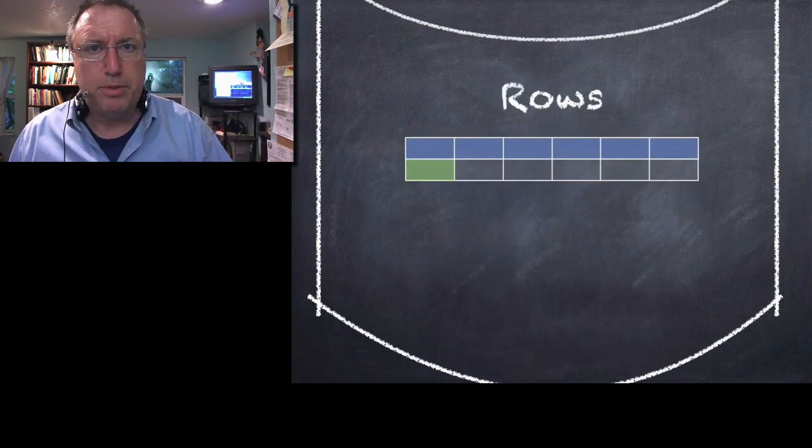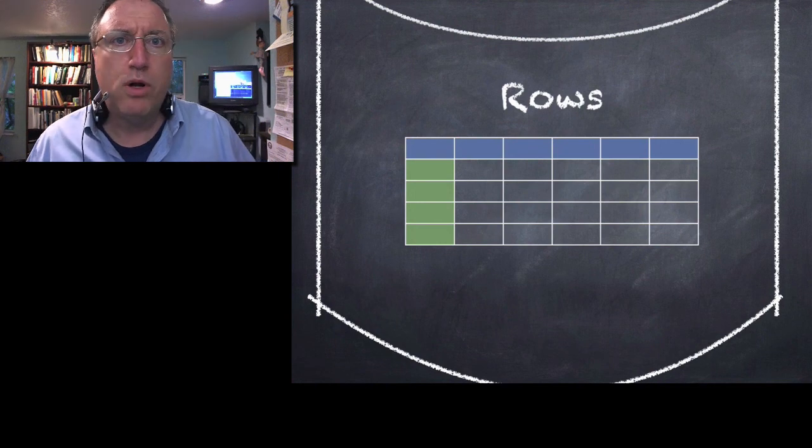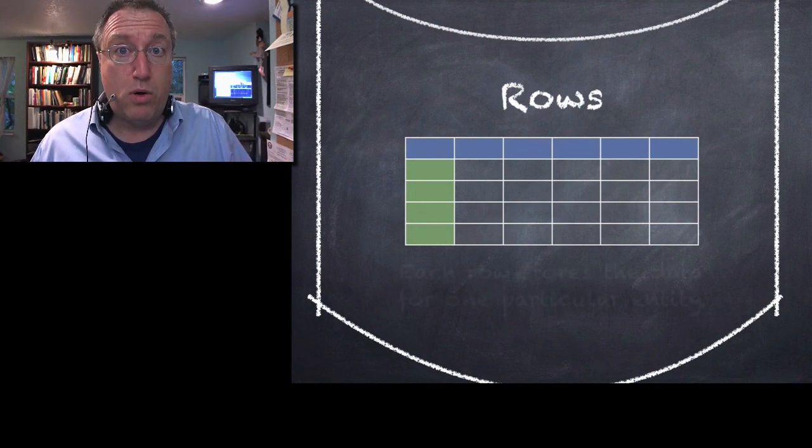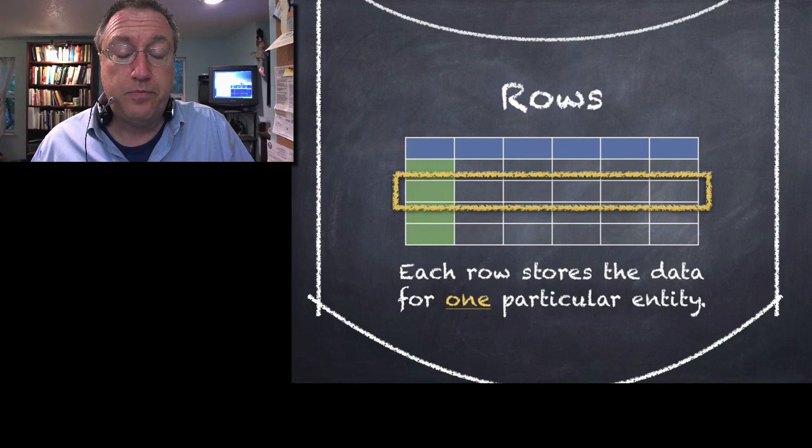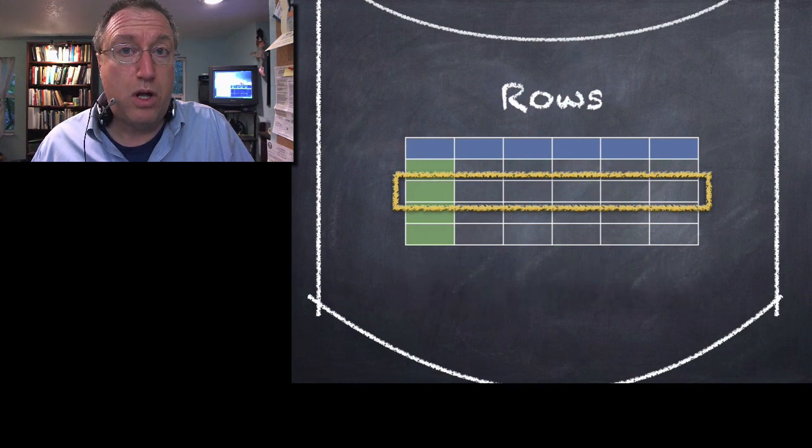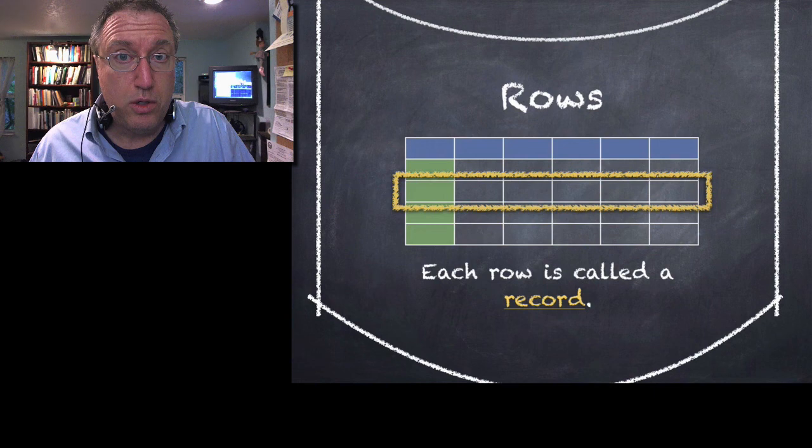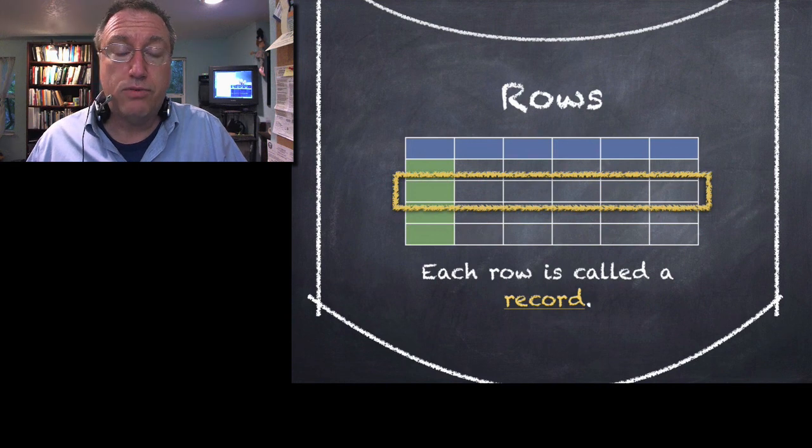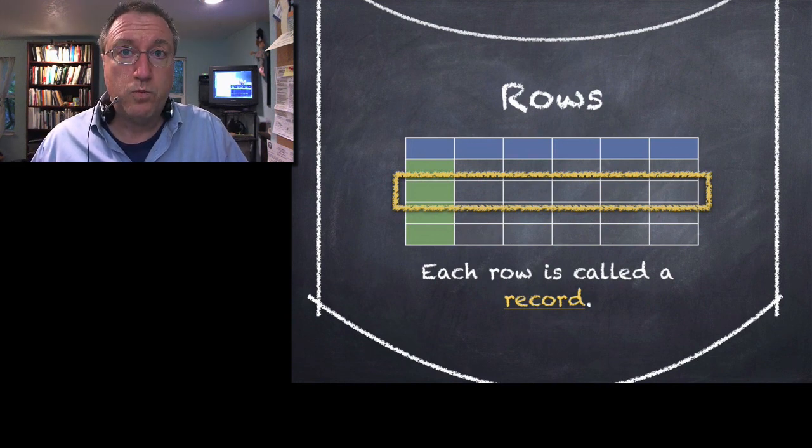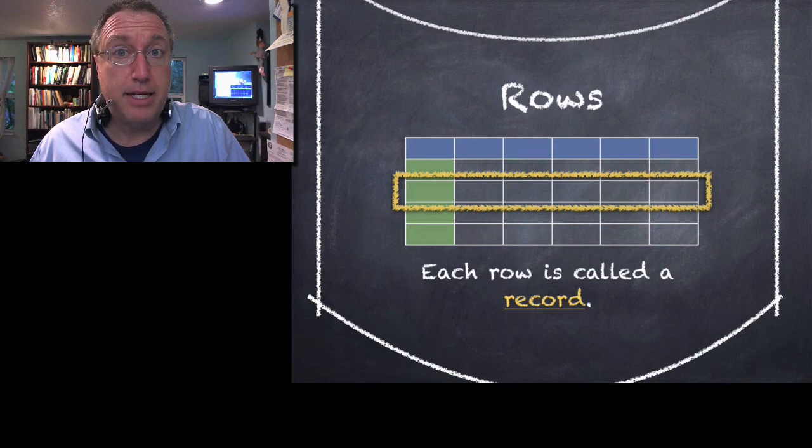Now, in each table, we've got a whole bunch of rows. And each row represents one particular entity. Rows are called records. You insert records into tables. You insert, or you retrieve records from tables. You'll notice we're doing a lot of vocabulary. We'll go over this again in just a minute.